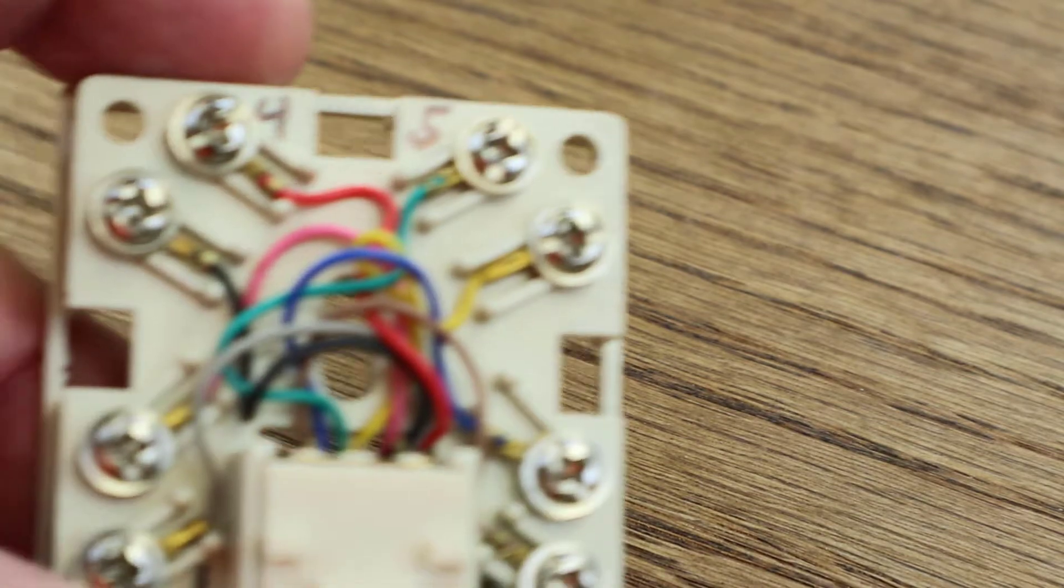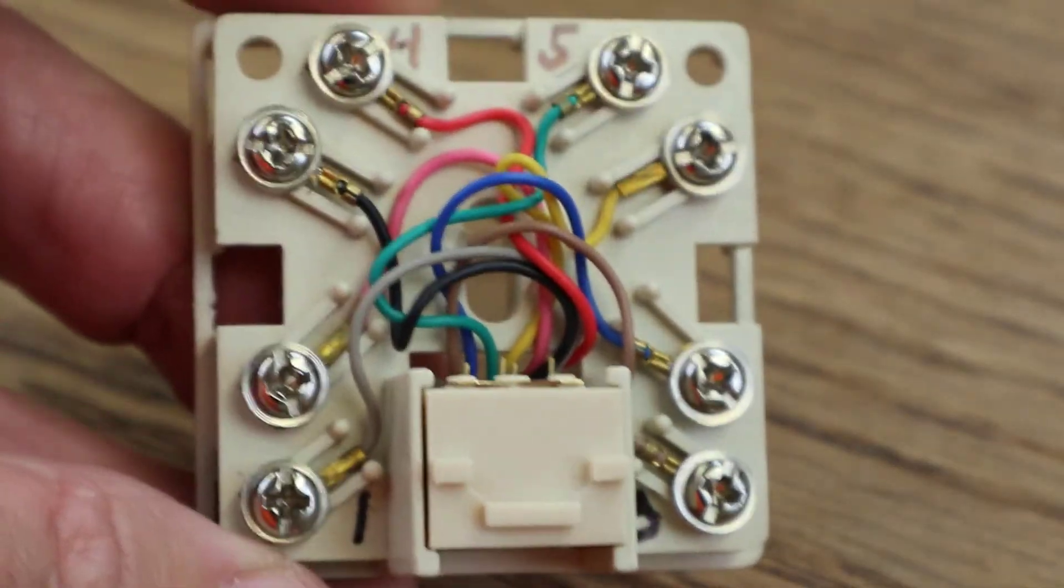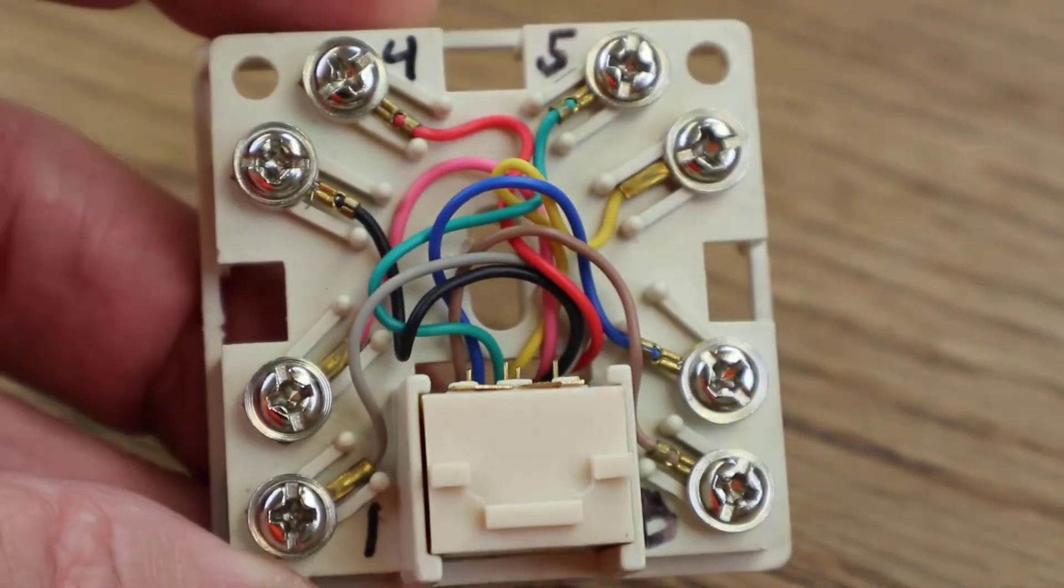Okay, now we'll go through the RJ31X. There it is, you can see I've labeled it here with my Sharpie to make it simple.